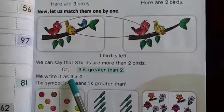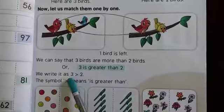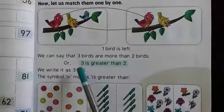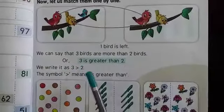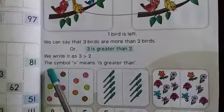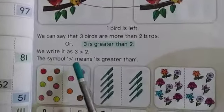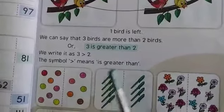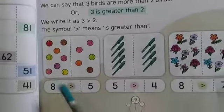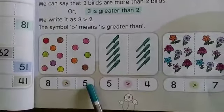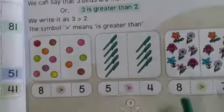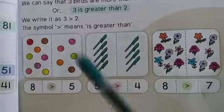3 is bigger than 2. We will open the mouth. 2 is smaller than 3. We will open the mouth. 3 is greater than 2. The symbol means is greater than. Here you can see: 8 is greater than 5, 5 is greater than 4, 8 is greater than 7.